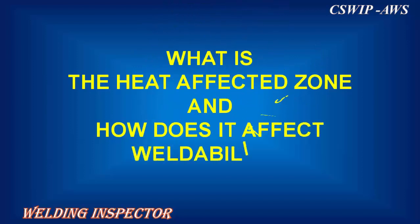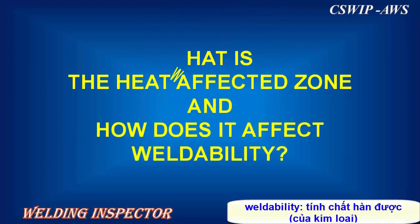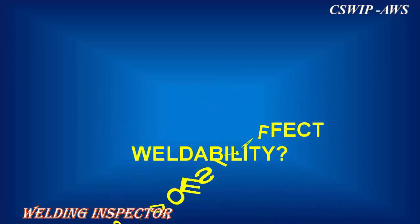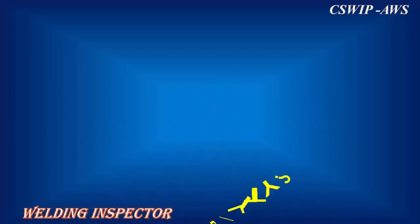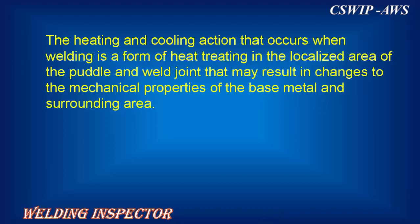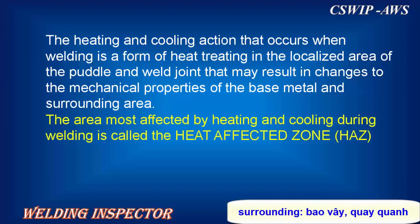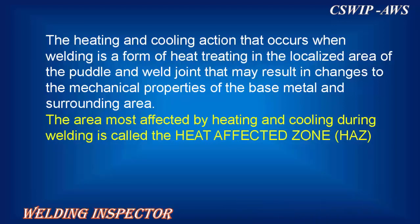What is the heat affected zone and how does it affect weldability? The heating and cooling action that occurs when welding is a form of heat treating in the localized area of the puddle and weld joint, that may result in changes to the mechanical properties of the base metal and surrounding area. The area most affected by heating and cooling during welding is called the heat affected zone.